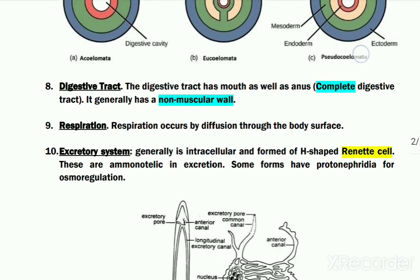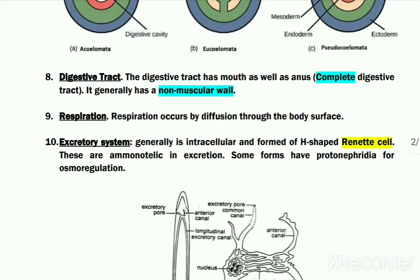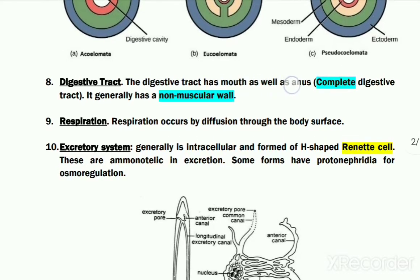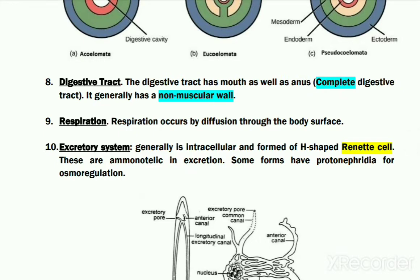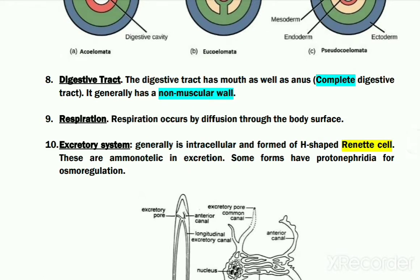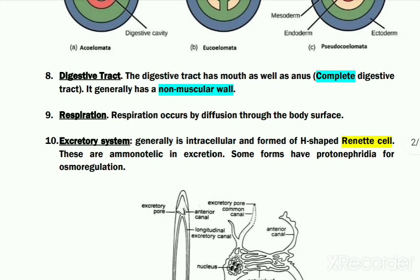Regarding their digestive tract: the alimentary canal or digestive tract is complete, meaning it has both a mouth and an anus. However, the wall of the alimentary canal does not have any muscles — it is non-muscular. These organisms do not have any specific respiratory system; respiration occurs by diffusion of gases through the general body surface.